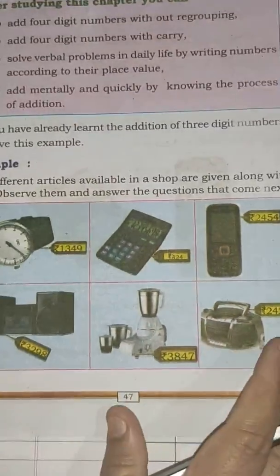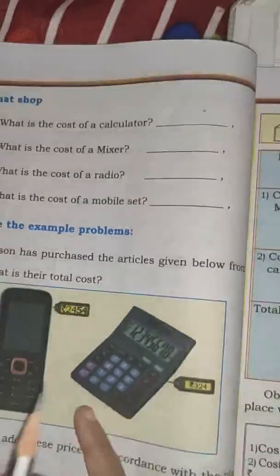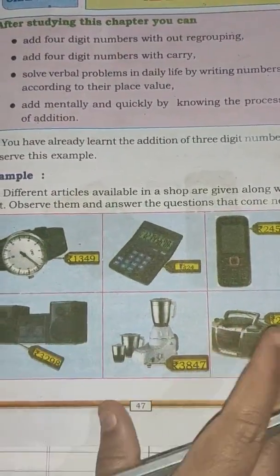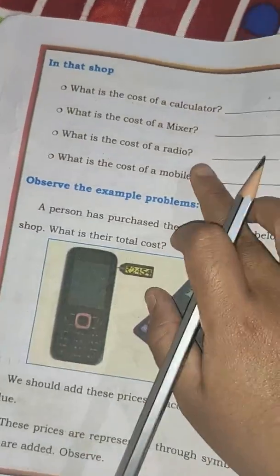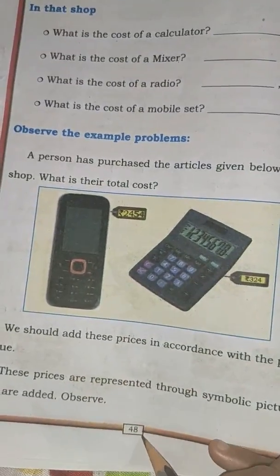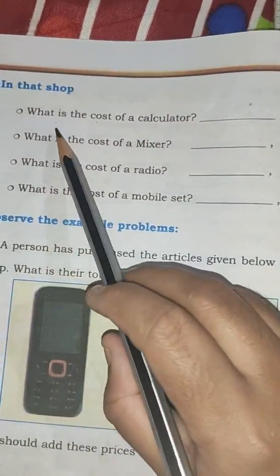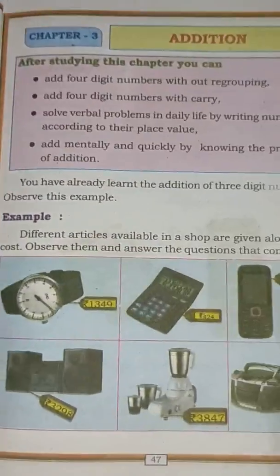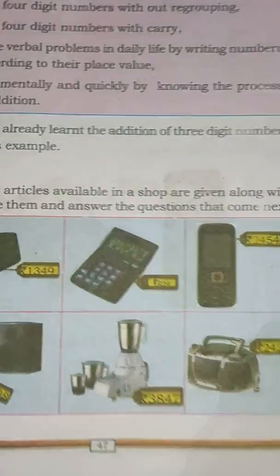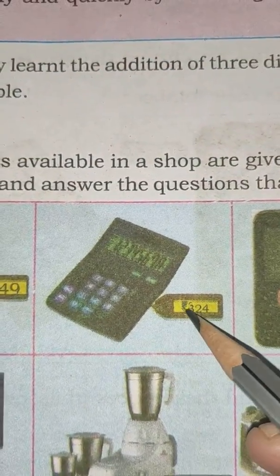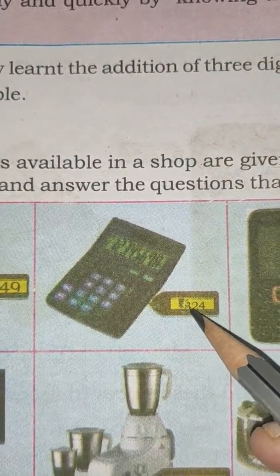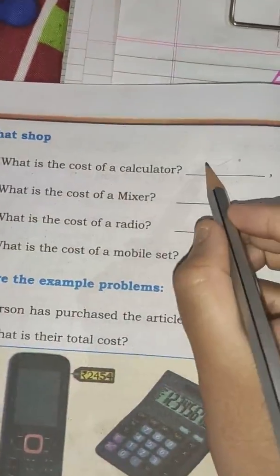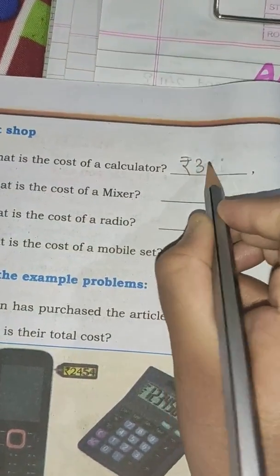So here we are having some questions. After observing these objects we have to answer the questions on page number 48. The first question is: what is the cost of a calculator? The cost of the calculator is rupees 324. We will write here rupees 324.